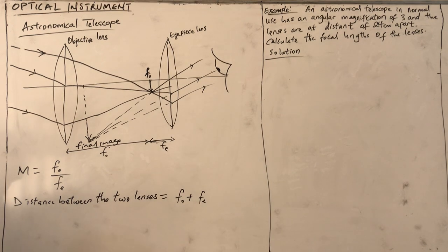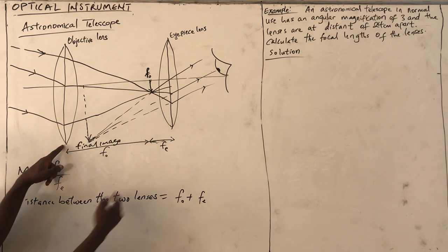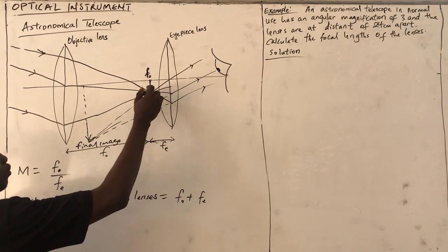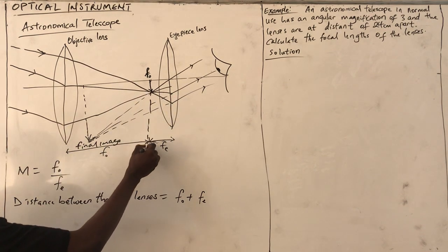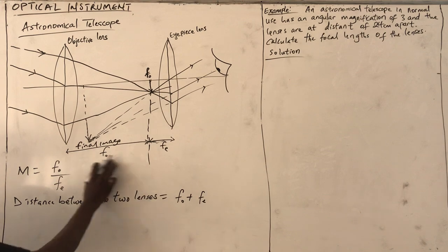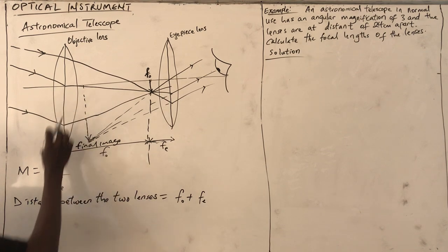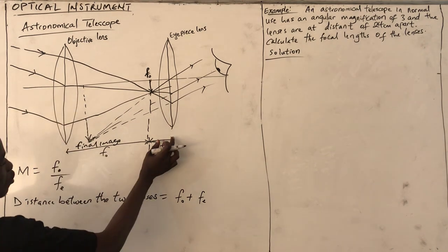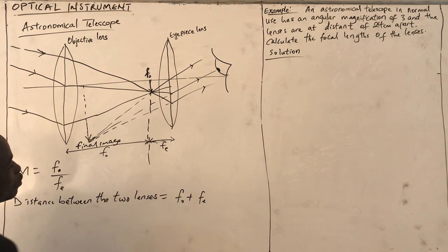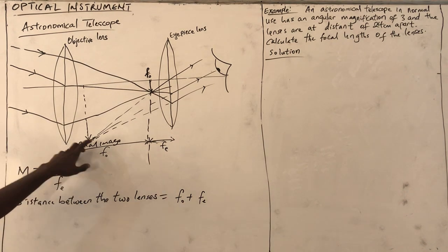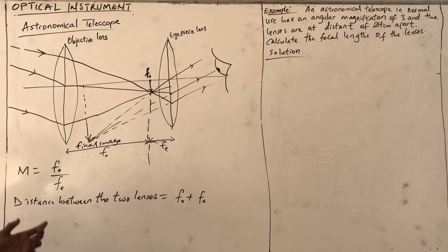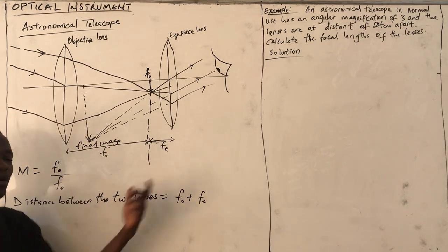From this, we can see that from here to here, that's the focal length of the objective lens, and this short distance is the focal length of the eyepiece. That's why the focal length of the objective lens must be greater than that of the eyepiece.